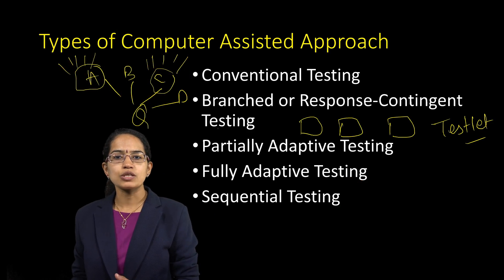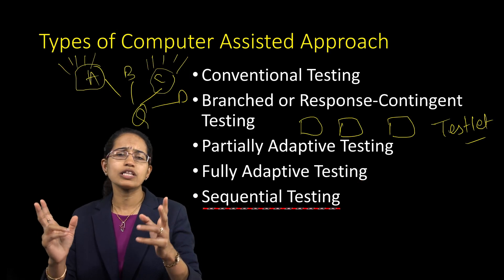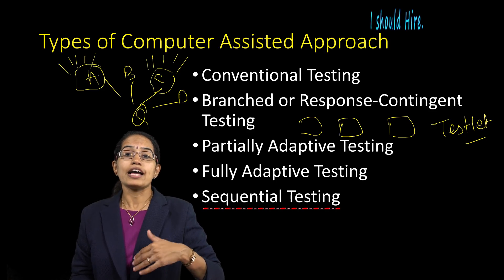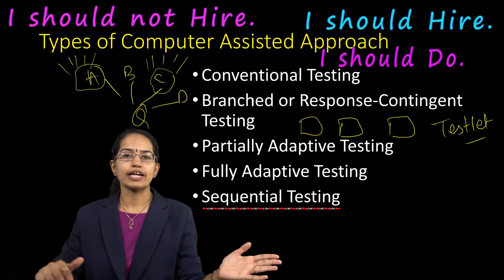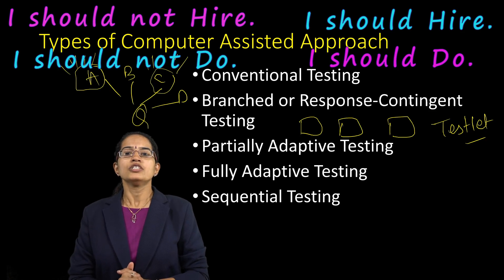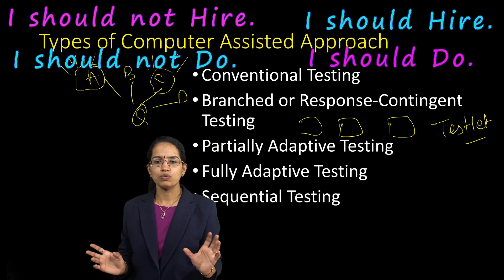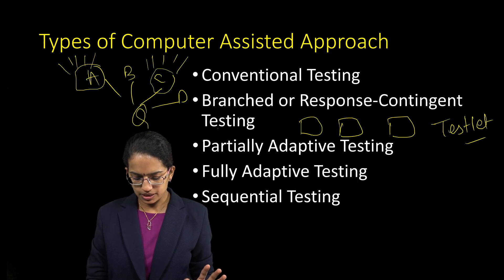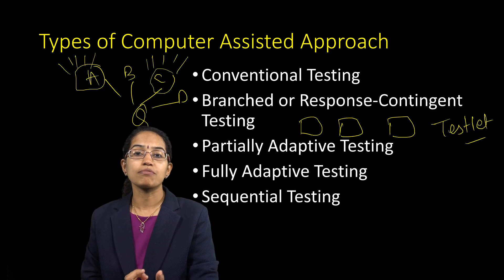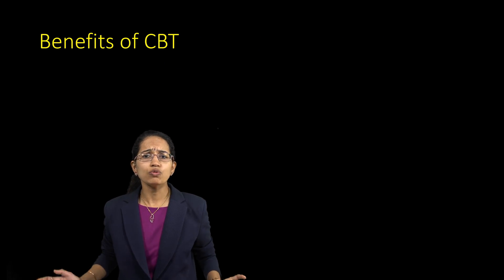In a fully adaptive test, the difficulty continuously varies based on each response. The fifth type is sequential testing, which focuses only on classification decisions — for example, should I hire or not hire, should I proceed or not proceed. That's a binary classification decision. So those are the five basic types of computer-assisted approaches, of which the computer-adaptive test is the most important and most scientific.